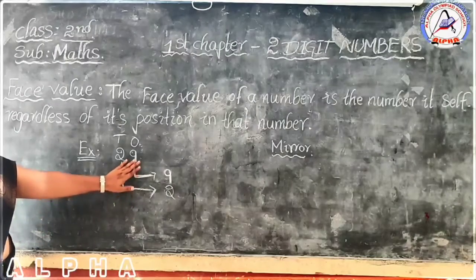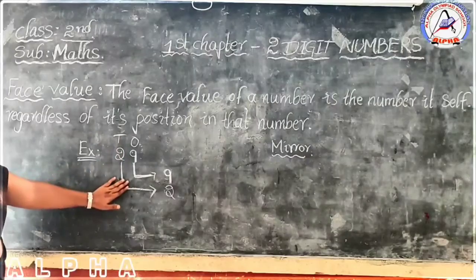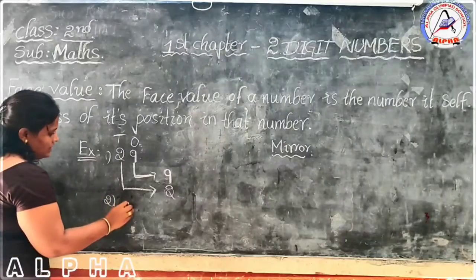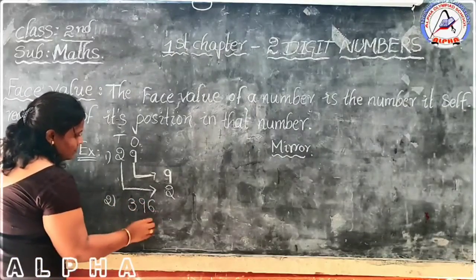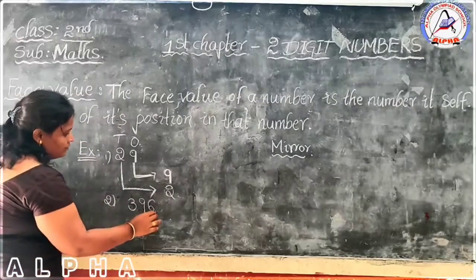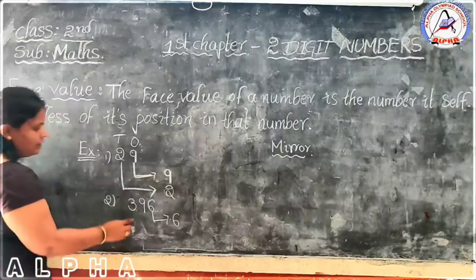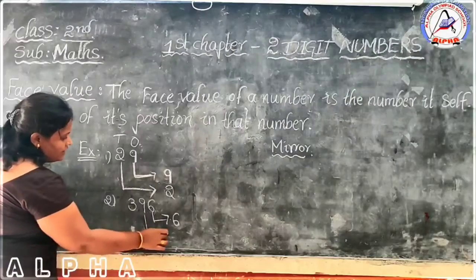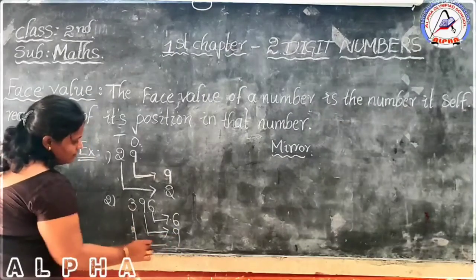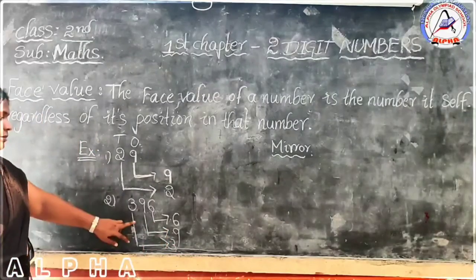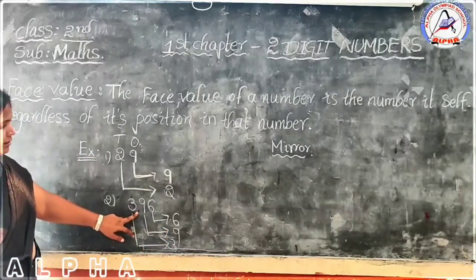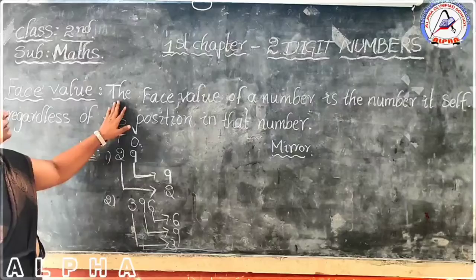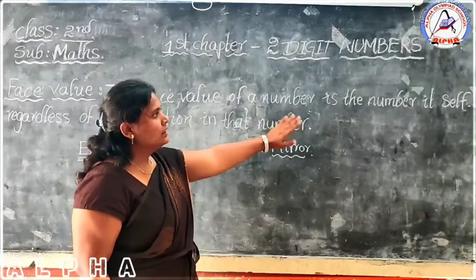There is no need to worry about place value for face value. Observe this and write the face value. Now the second example — write the face value for this number. Here there is a number 6, so we give the face value as 6. This one is also 9, this one is also 9. Whatever numbers appear, those numbers are their face values.